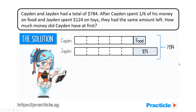The question asks us to find the amount of money that Caden had at first. Caden started off with 6 units, so we first need to find the value of 1 unit. Counting the units in the model: 1, 2, 3, 4, 5, 6, 7, 8, 9, 10, 11. So 11 units plus $124 gives us a total of $784.